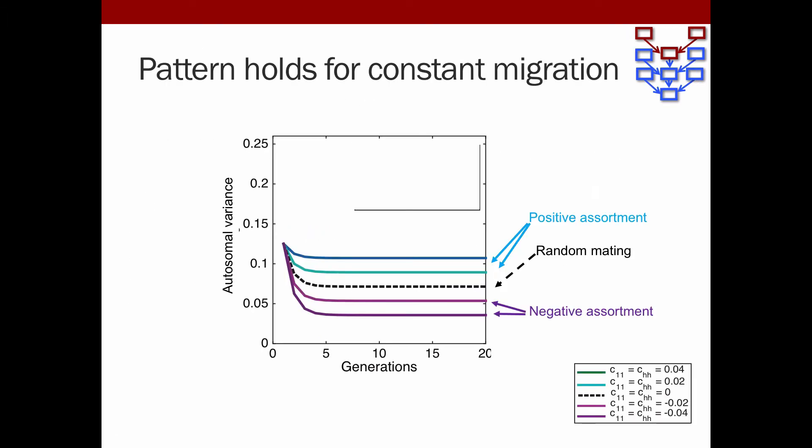This pattern also holds for constant migration. This is the same plot with the timing since admixture started on the x-axis and the autosomal variance on the y-axis. We see that random mating in this dash line, positive assortment increases and negative assortment decreases. Unlike a single admixture event, it goes to a long term limit rather than 0, however, because there's constant contributions from the sources.